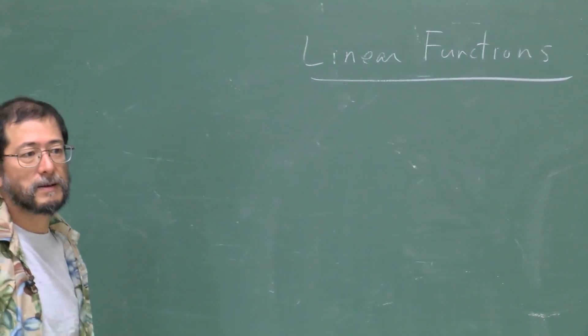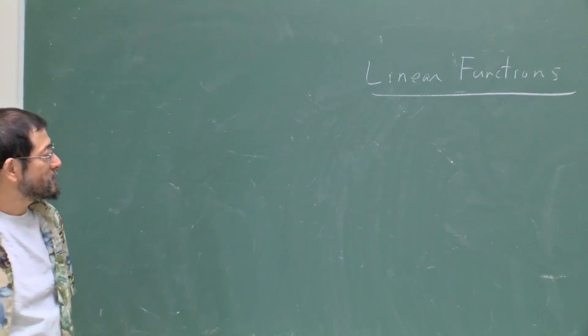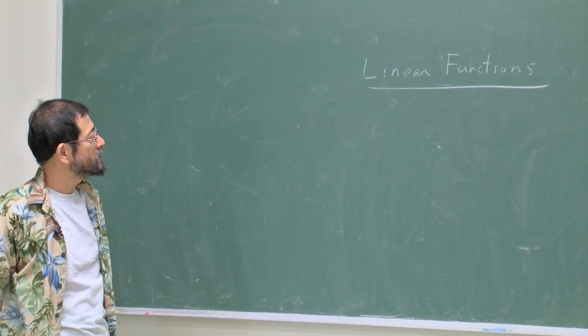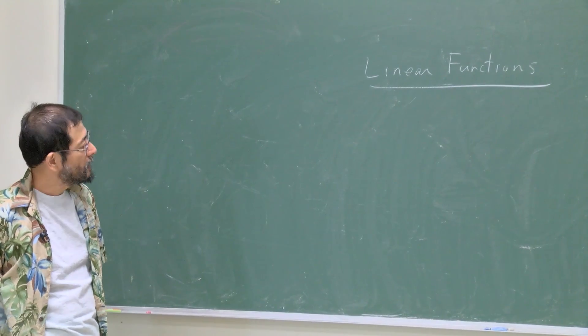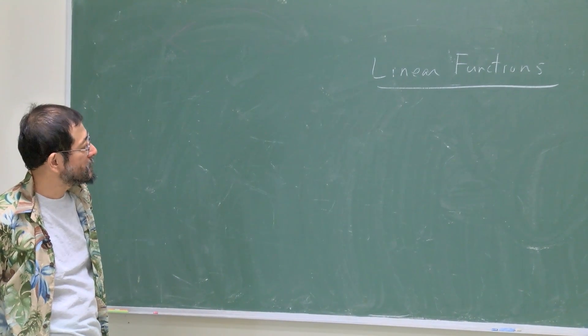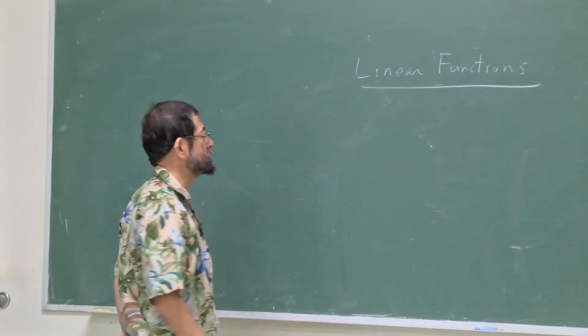It is called linear because the graph of this function is a straight line. That's where this name linear comes from. Now let me start from a practical example of this linear function.